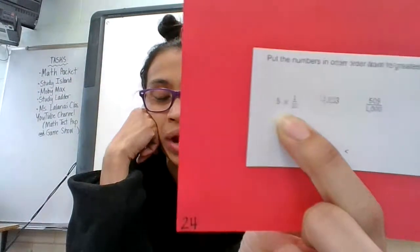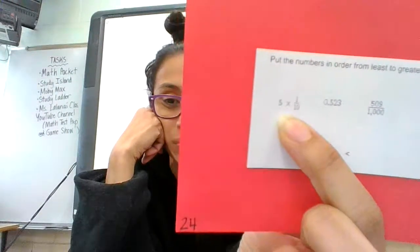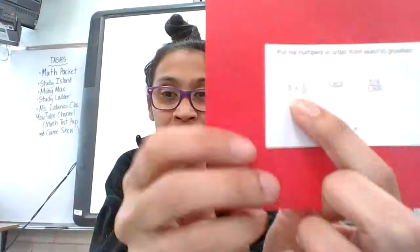They all look different. They are numbers in different forms. So, for example, this 5 times 1/10, what way of writing numbers is that? That's expanded form, okay? Expanded form.